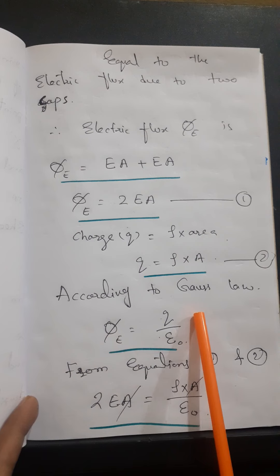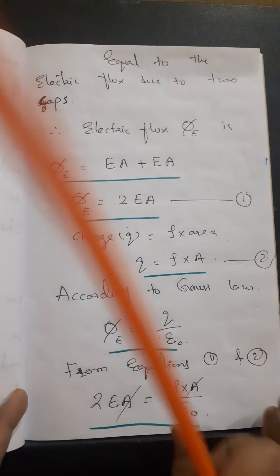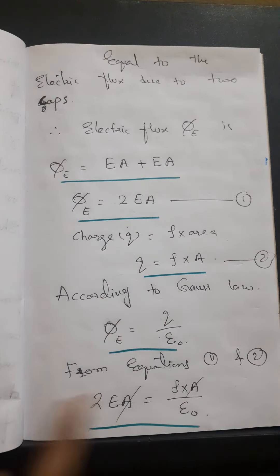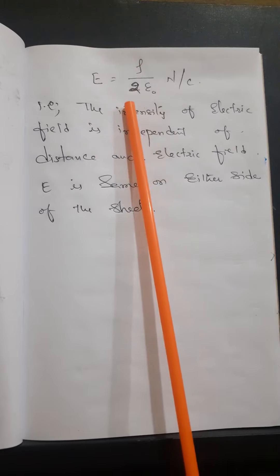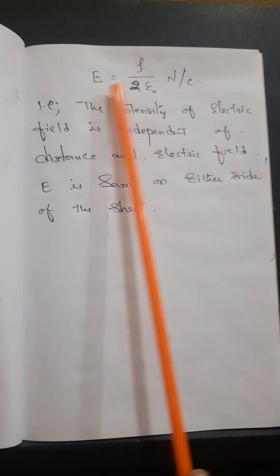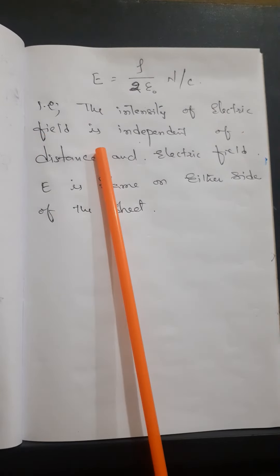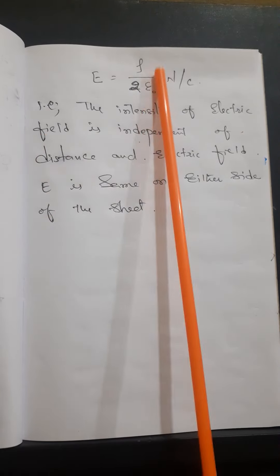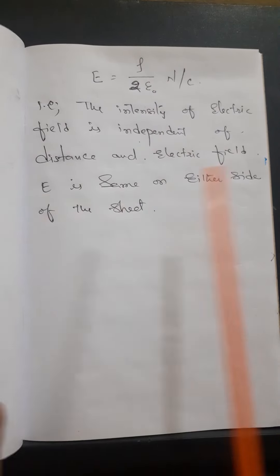Substituting Equation 1 and Equation 2 into Gauss's Law, we get: 2EA = ρA / ε₀. The area A cancels on both sides, giving us E = ρ / (2ε₀) Newtons per Coulomb. From this equation, we conclude that the intensity of the electric field is independent of distance — there is no distance term in the equation. The electric field E is the same on either side of the sheet.